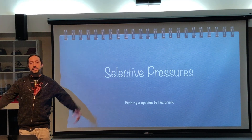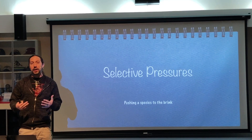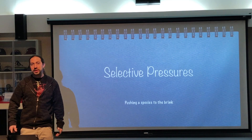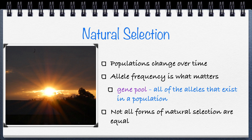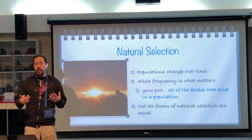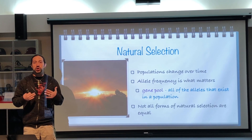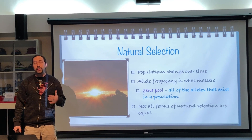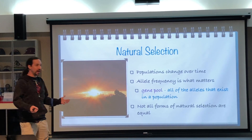Welcome back. Today we're going to be looking at selective pressures — what causes some alleles to be favored and other alleles to be removed from a gene pool. First, recognizing that populations do change over time. As a population changes, we need to look at how it changes specifically through allele frequency. The gene pool is all of the alleles that exist in a population.